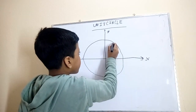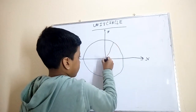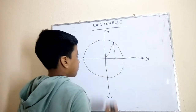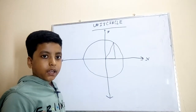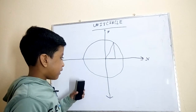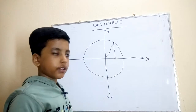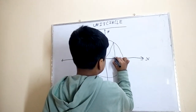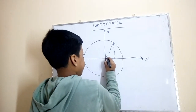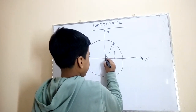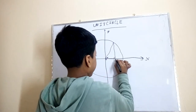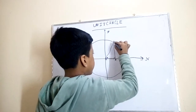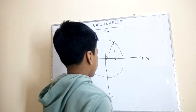Now let's draw a triangle, but it has to be a right triangle. Why is it a right triangle? Because this is going to tell us something important about trigonometry. This angle is theta. Let's name this point O, this point A, and the one touching the circle is point B.